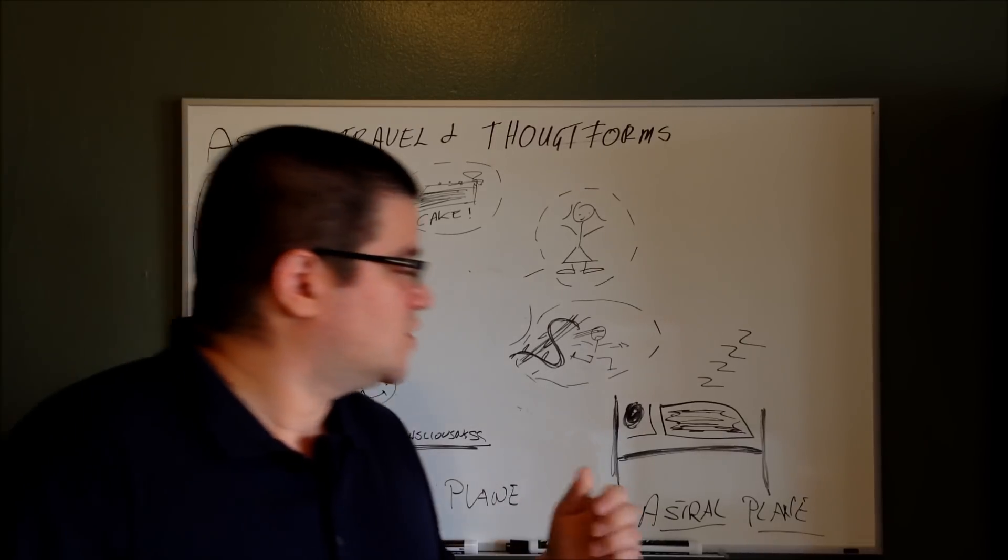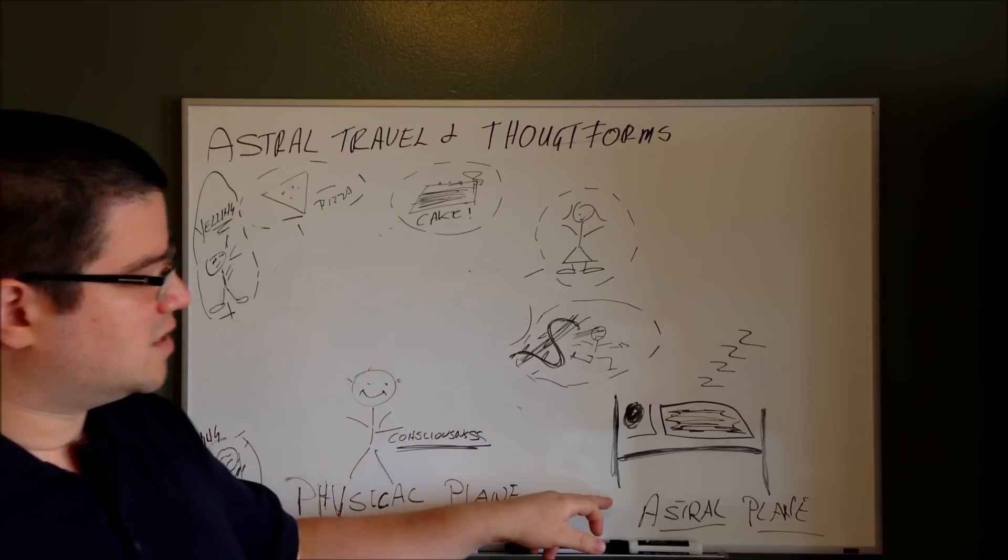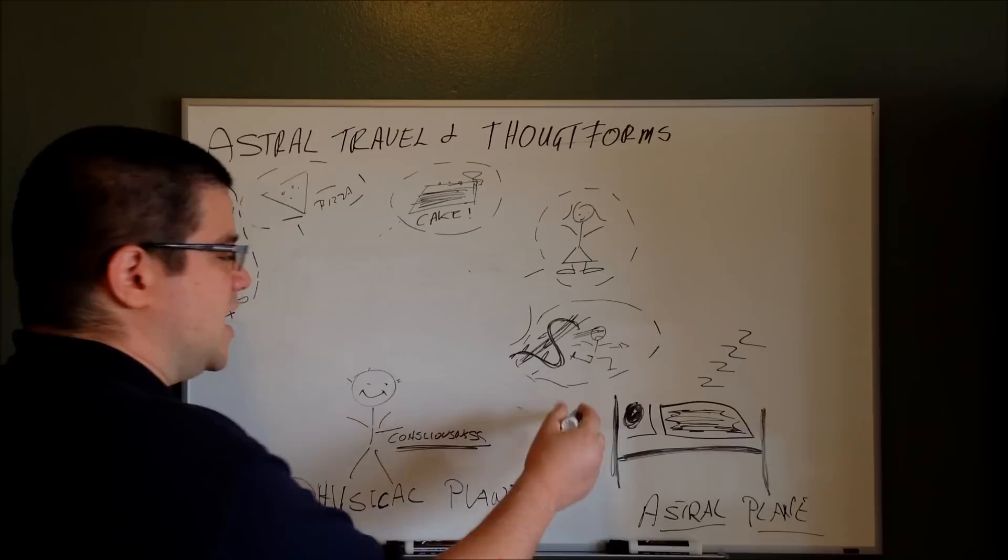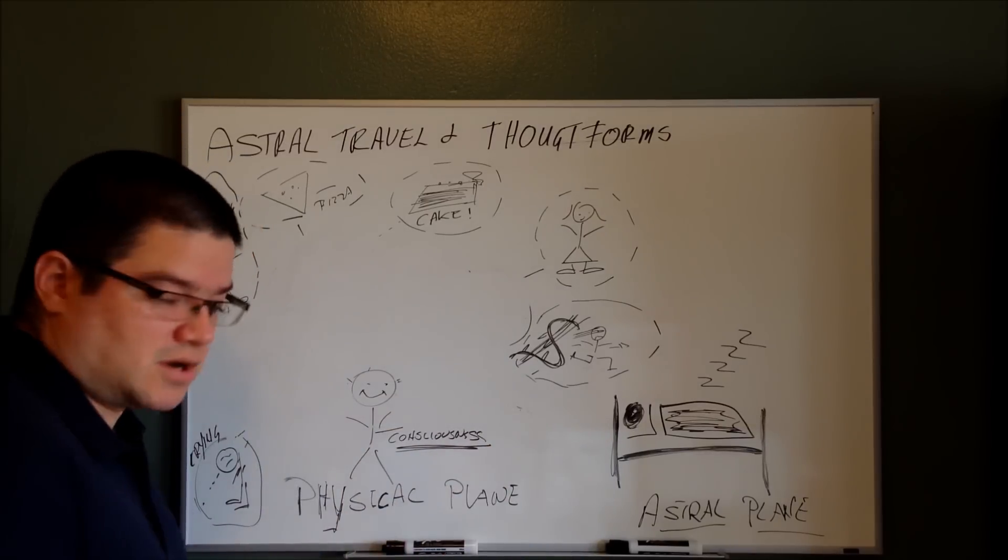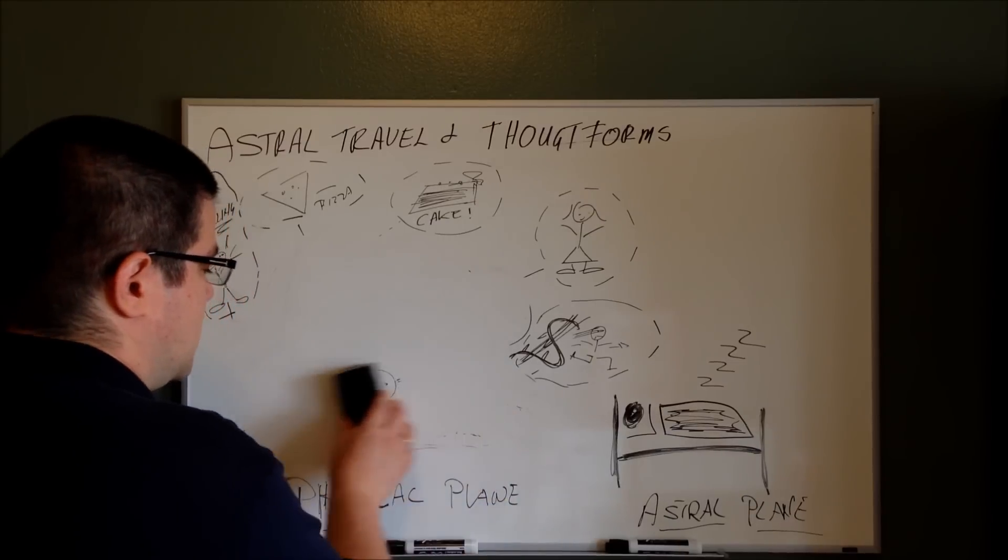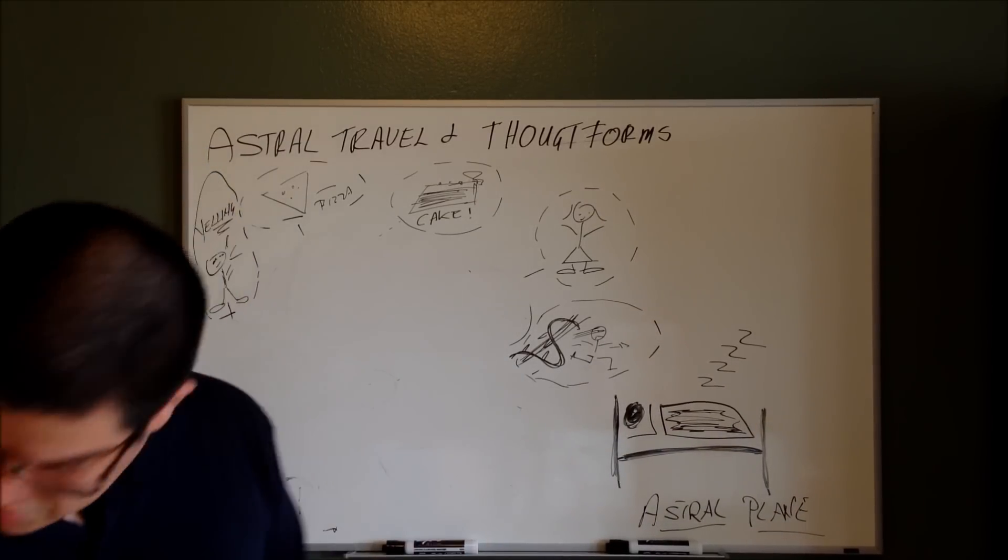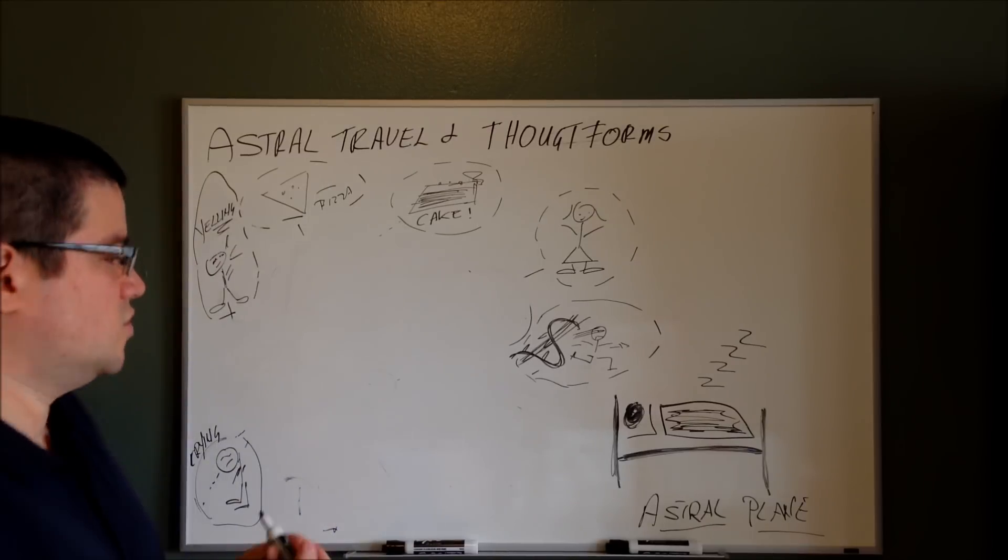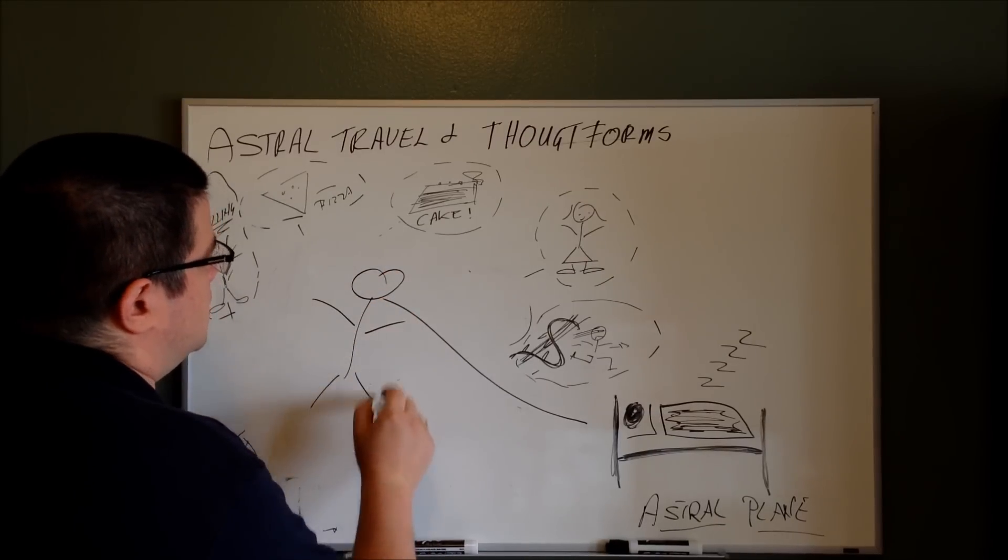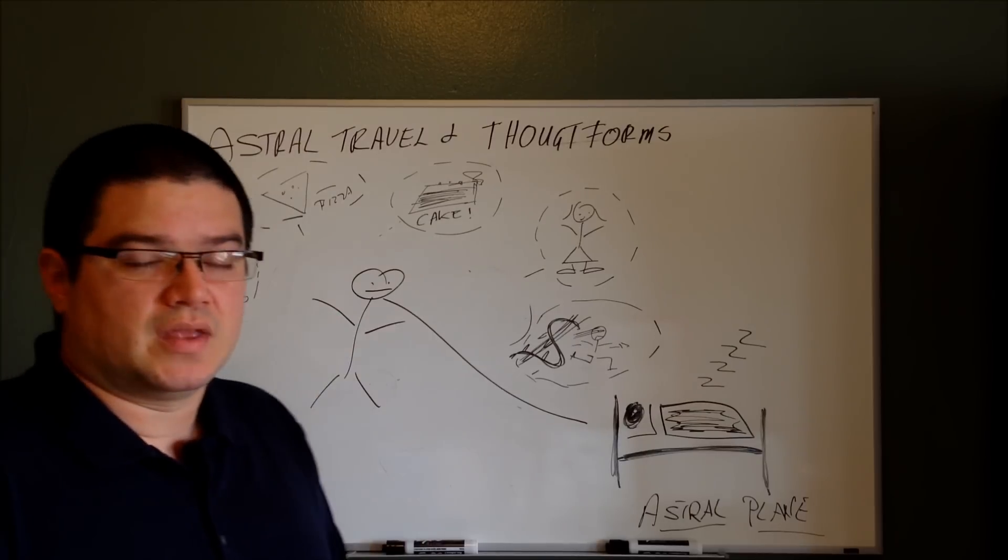As you can see, this is how the thought forms affect us when we are in the astral plane. So our little stick figure here got out. This is what we are trying to draw here. Our little stick figure got out, and now he is over here flying. But he can't get out because of his thought forms.